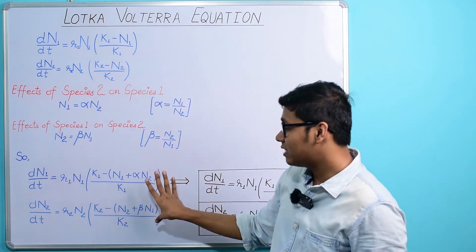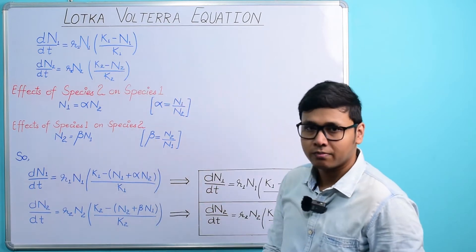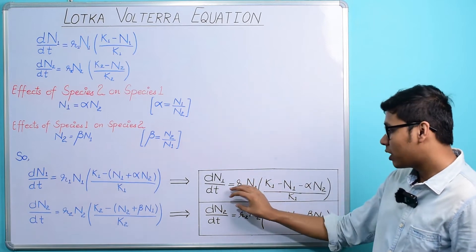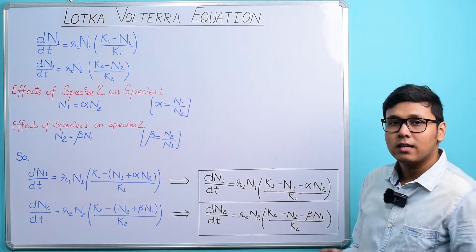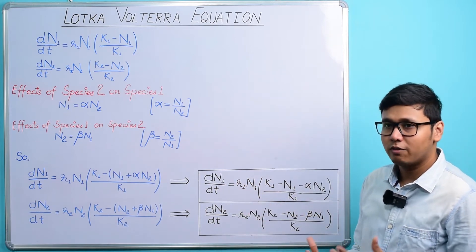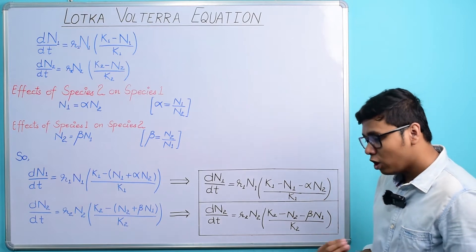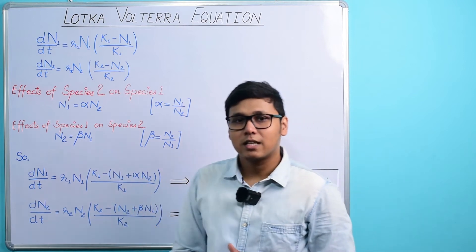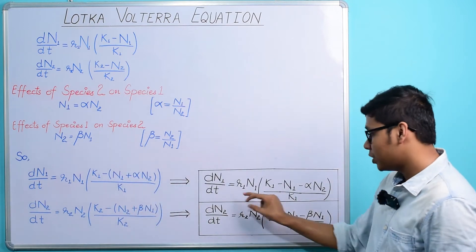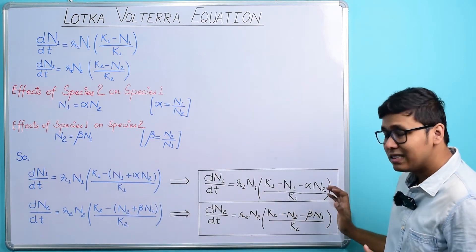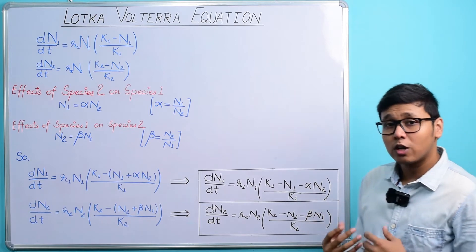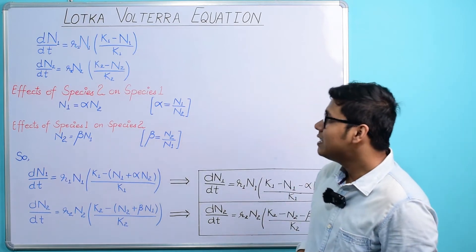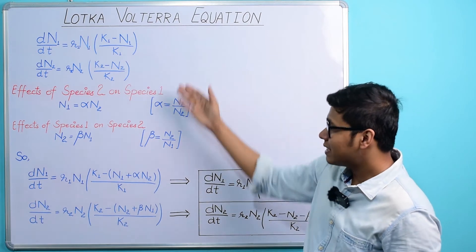Now all we need to do is add these competition coefficients into the respective population growth equations to see the interspecific competitive effects of one species on the other. Alpha — the effect of species 2 on species 1 — is added to the population growth equation of species 1, and beta — the effect of species 1 on species 2 — is added to the equation of species 2. By simplifying these terms we get the two Lotka-Volterra competition equations. Learn these equations because if you don't, you will struggle in the examination.